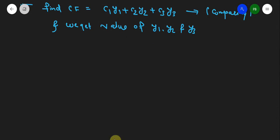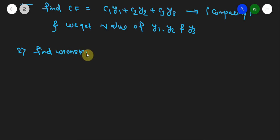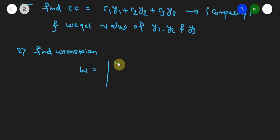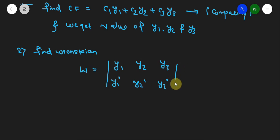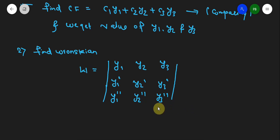In the second step, we find the Wronskian. In the previous method for second order, there were only two functions. Here there are three functions, so the Wronskian W is given by a 3×3 determinant: the first row is y1, y2, y3; the second row is y1', y2', y3'; and the third row is y1'', y2'', y3''.